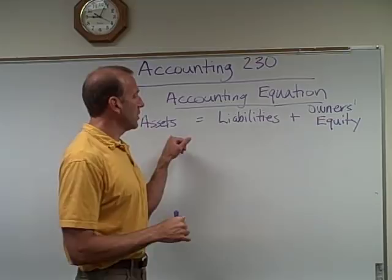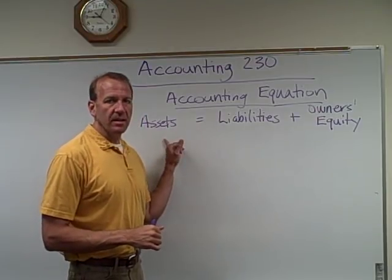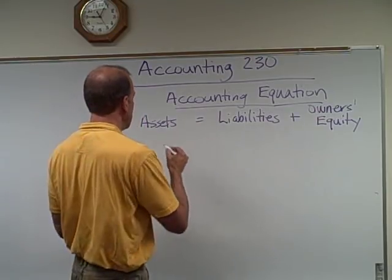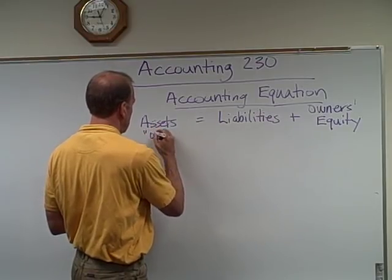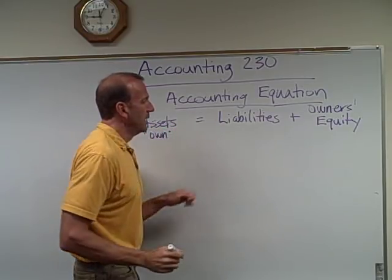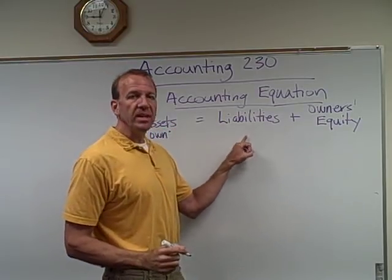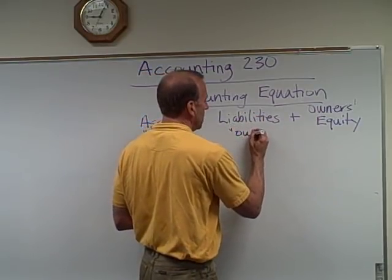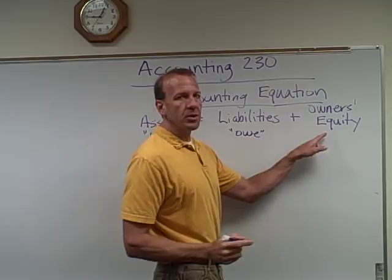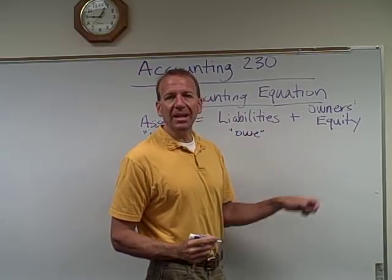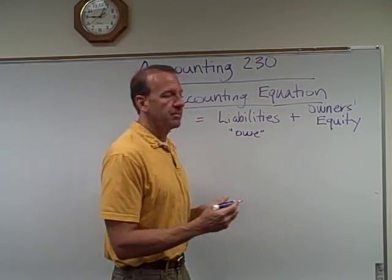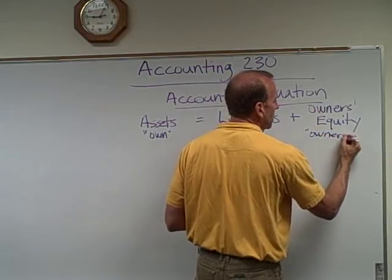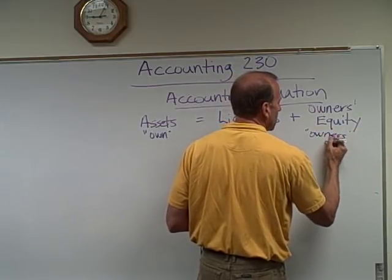It is a mathematical equation. Assets are things that we own. Liabilities, the other side of the equation, is what we owe. And then owner's equity is the claim that the owners of the company have — the owner's claim in the business.